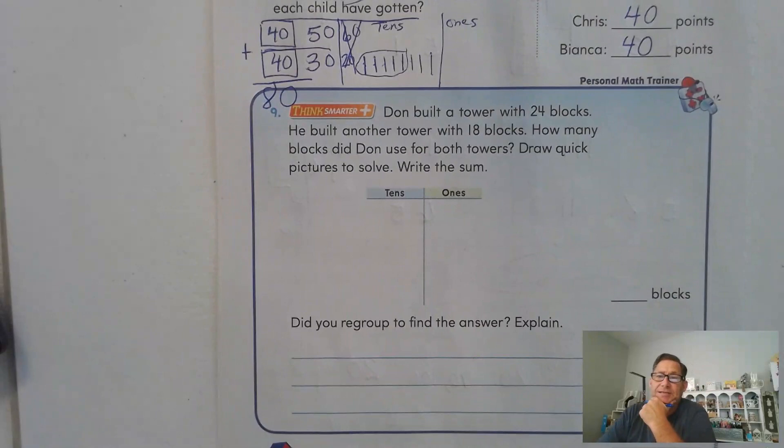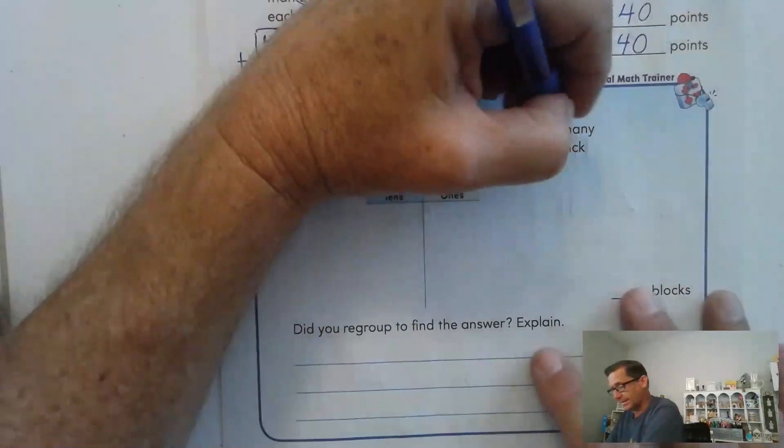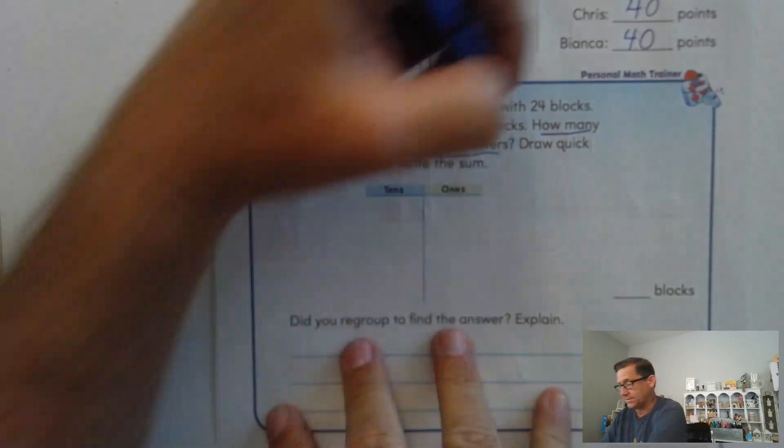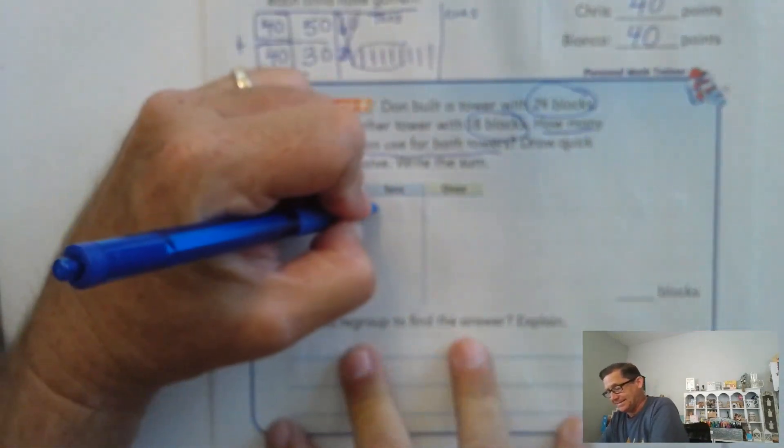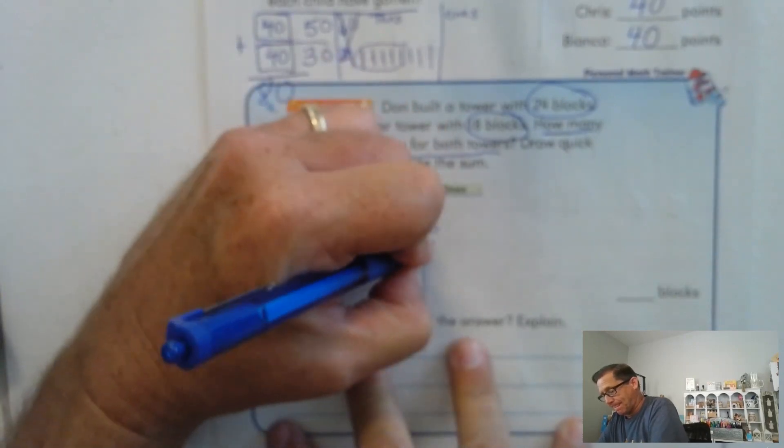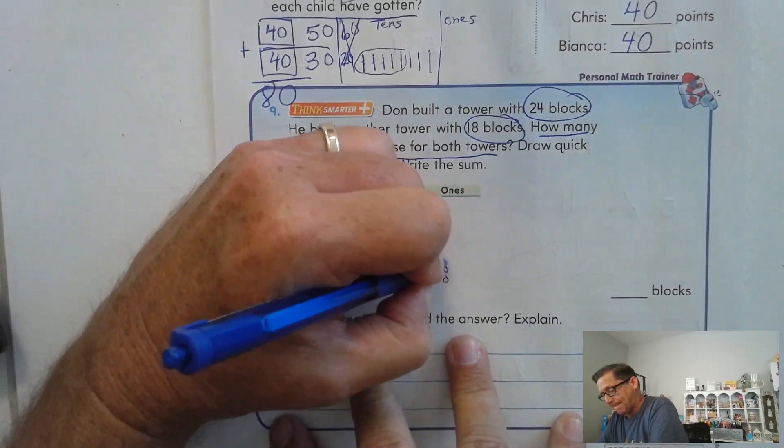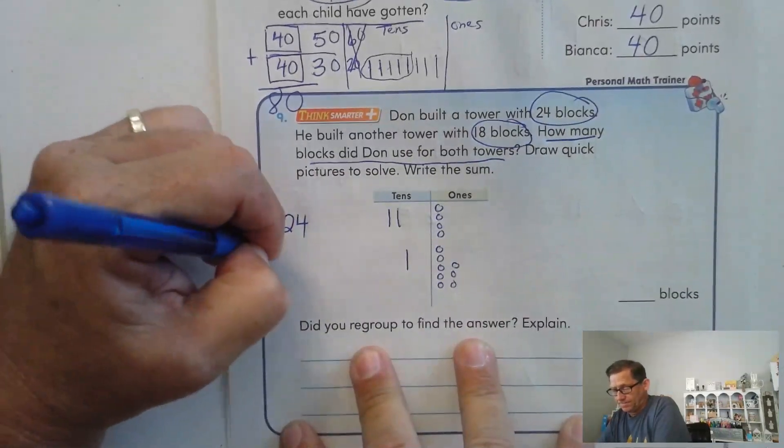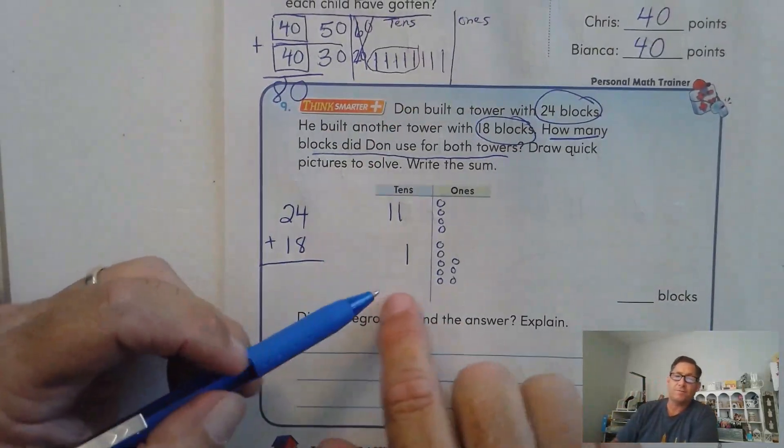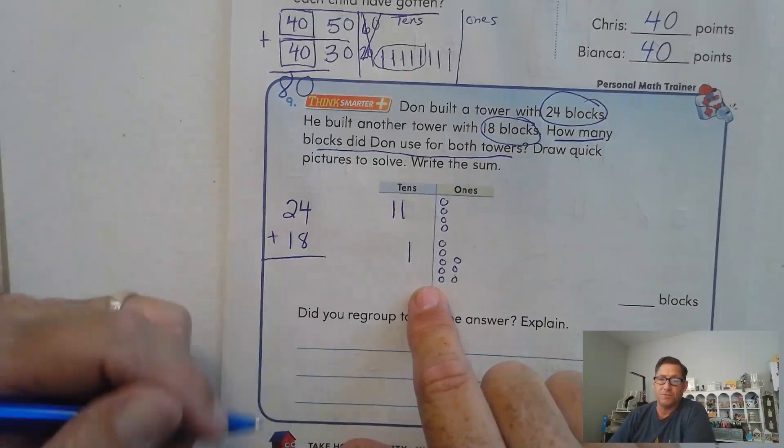Number nine, Don built a tower with 24 blocks. He built another tower with 18 blocks. How many blocks did Don use for both towers? 24 and 18. We have 24 plus 18. Are there any ones that need to be regrouped as a 10?